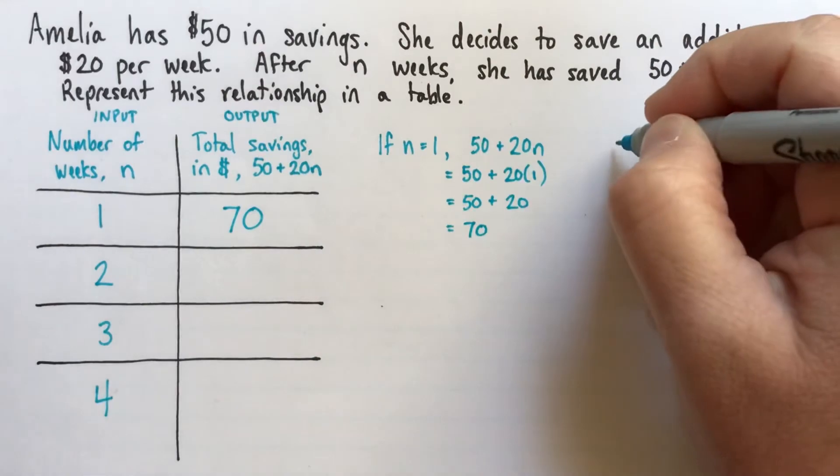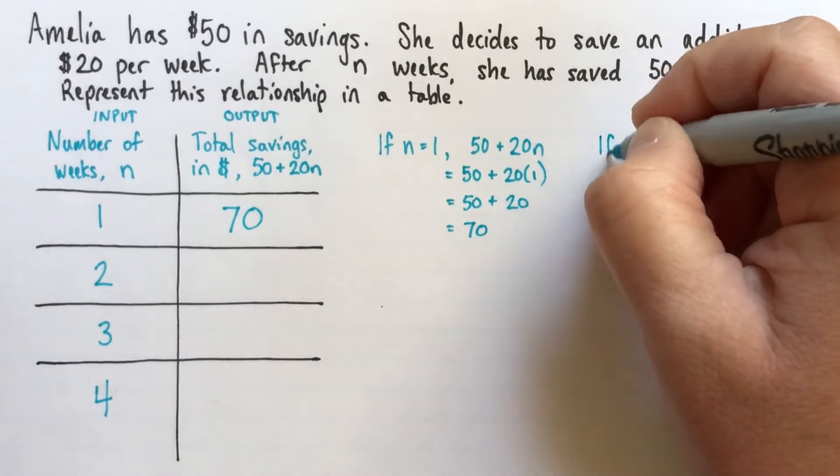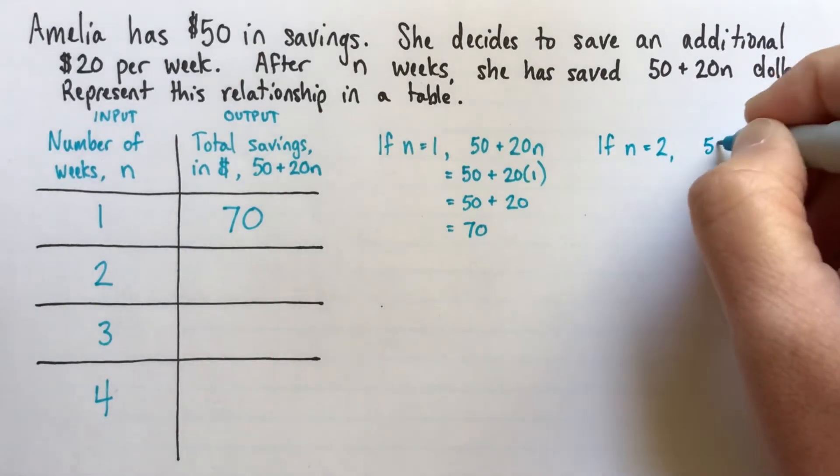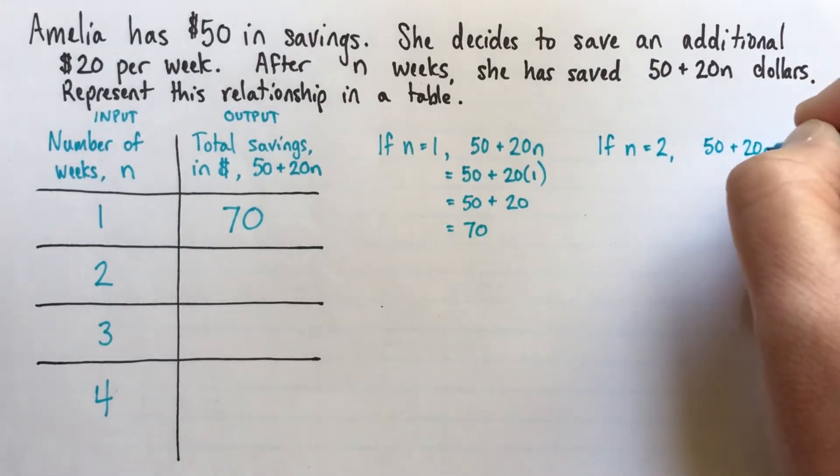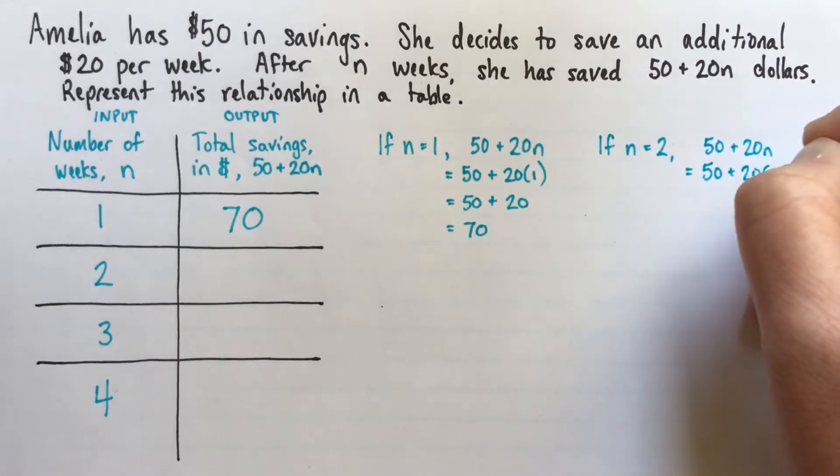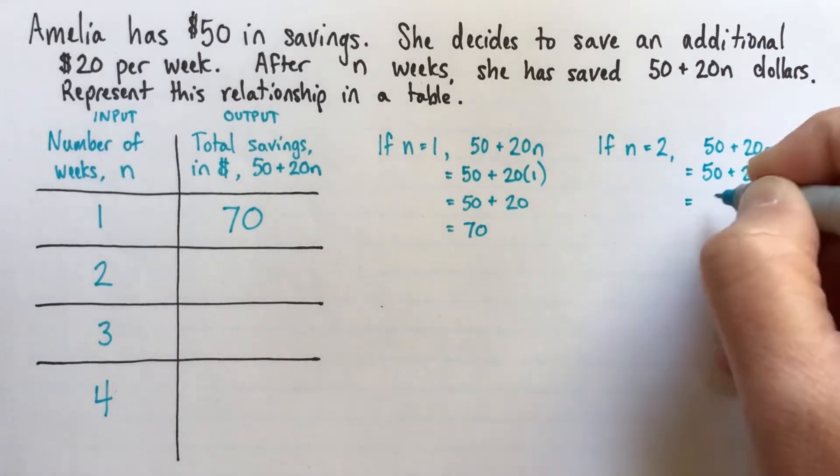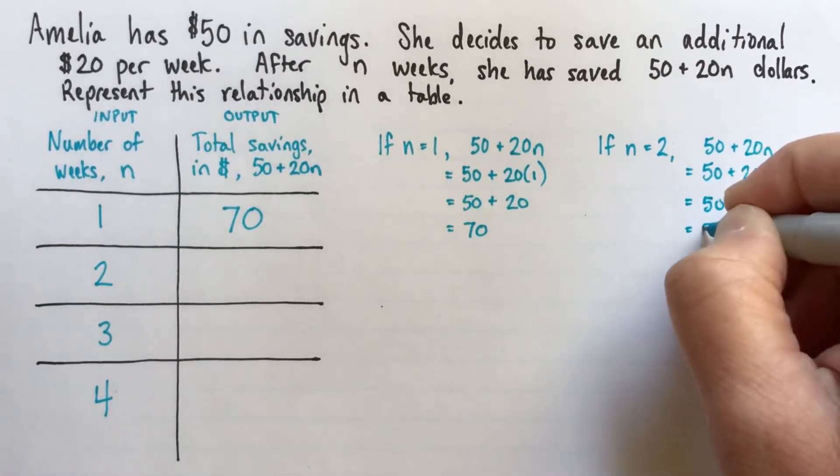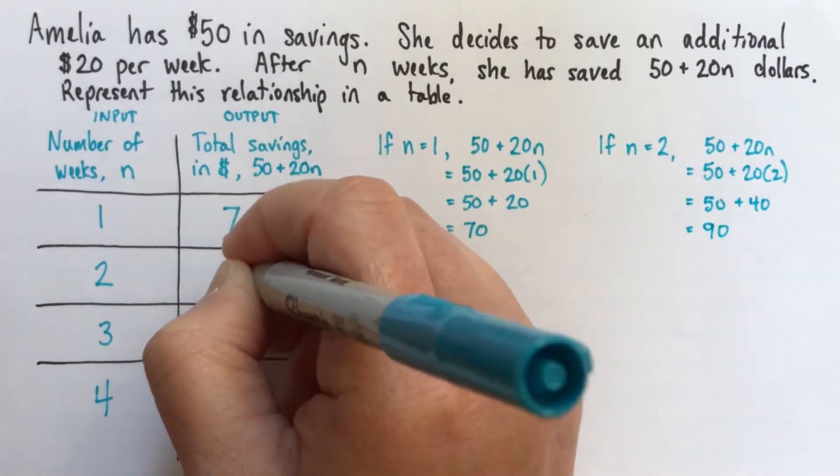Let's say next, I'll go over here maybe. If n equals 2, again, we want 50 plus 20n. So that's 50 plus 20 times 2. The next ones here I'm going to do a little quicker. So that would be $90.